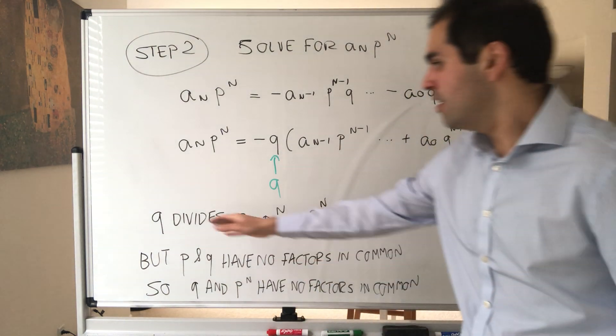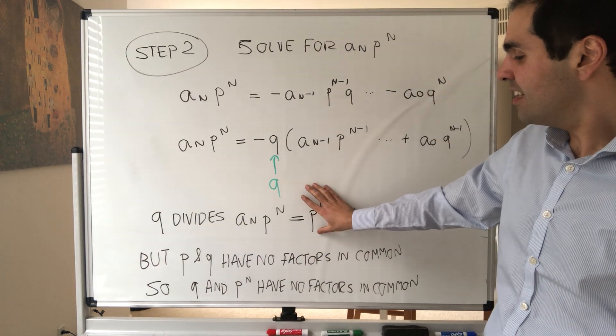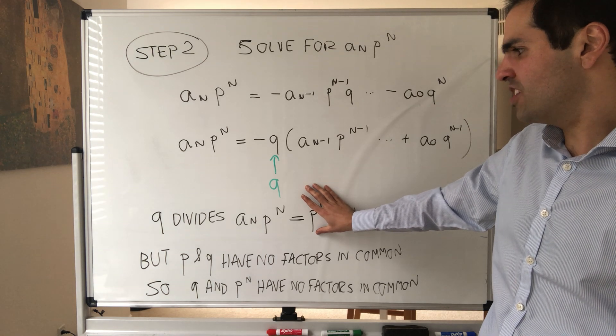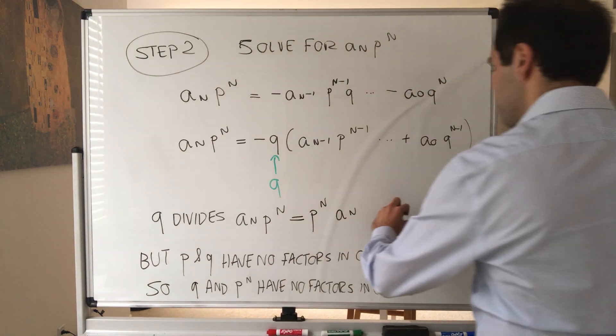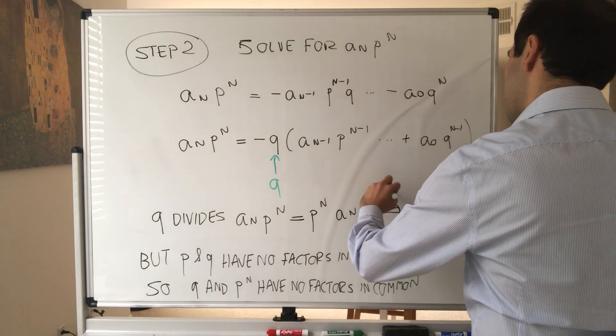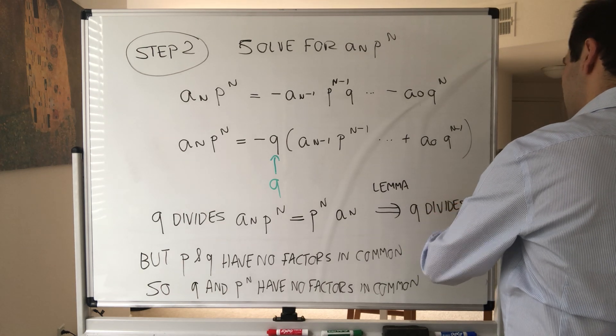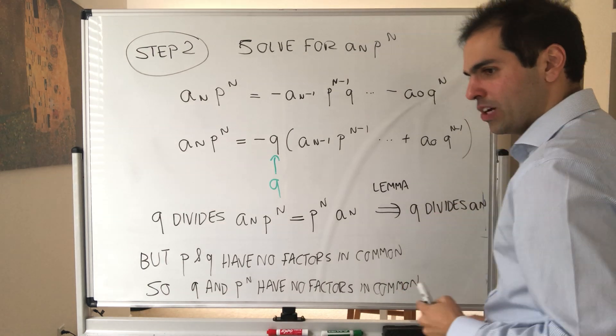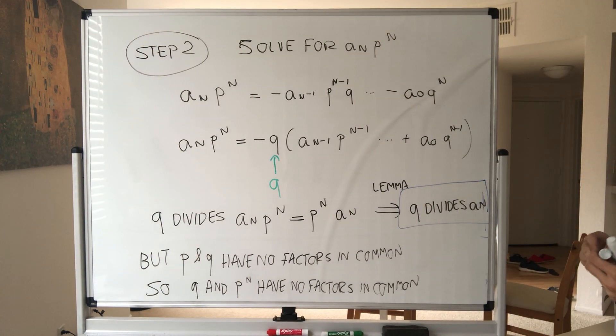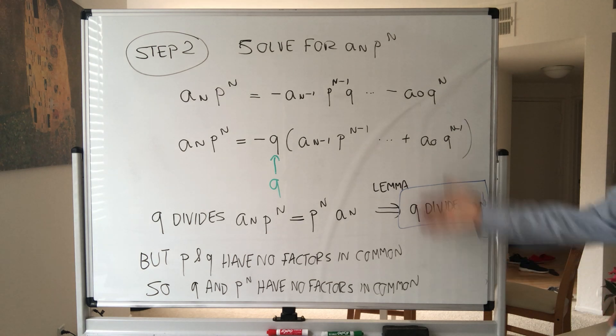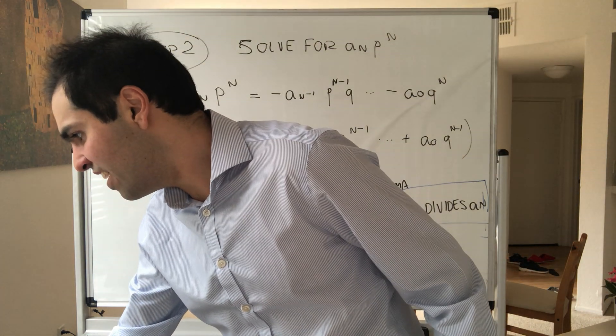So q and p^n have no factors in common. And so what do we have? Q divides p^n times a_n, but q and p^n they're independent of each other. So in fact, by our lemma, it follows that q has to divide a_n. But wait, that's exactly what we wanted. Remember, in the rational roots theorem it says if x is p over q, you have to show that q divides the leading term. And that's exactly what we did. And the beautiful thing is the other step of the proof is almost exactly the same, except we take our equation and solve for a_0 q^n.